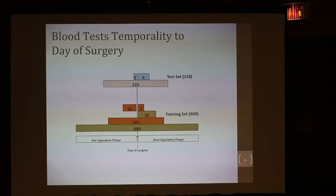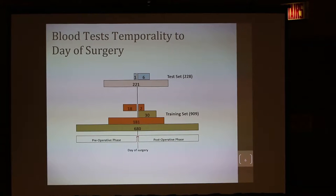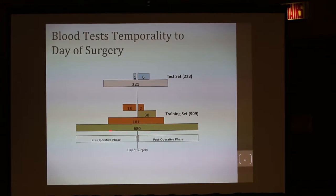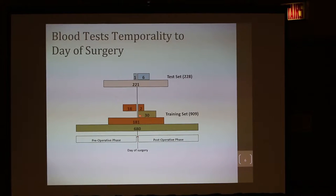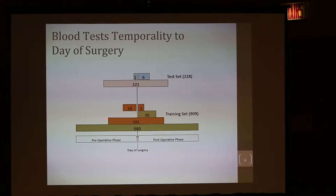One of the rules in the competition was that we are supposed to use pre-operative data for doing the predictions. Among the 680 in the training set who were not infected, all of them had both pre and post data. Of the infected, 181 had both pre and post. Whereas only 30 patients in the training set had only post-operative blood tests done, meaning they probably came in for an emergency, had the surgery, and then had their blood tests done.